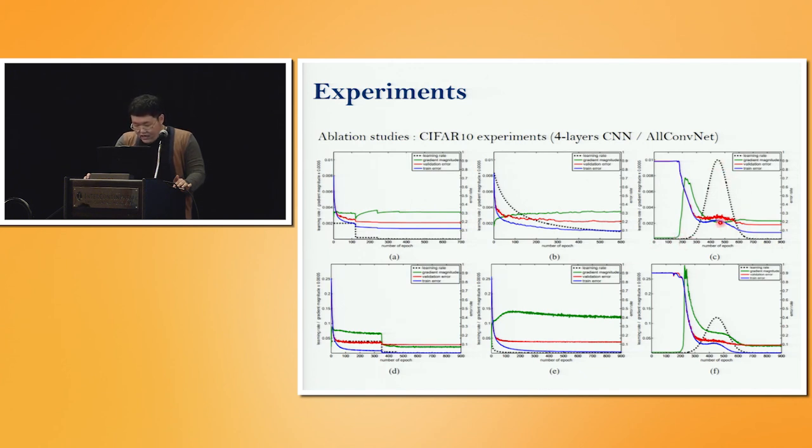As you can see, the discrepancies between validation error and train error are closing at peak learning rates. This is one of the experimental evidence that large learning rate is beneficial to generalization.